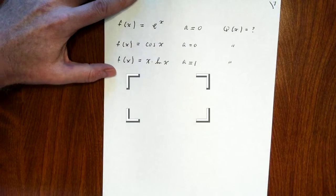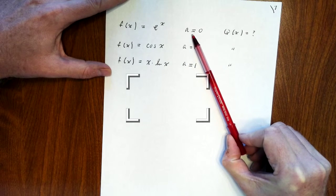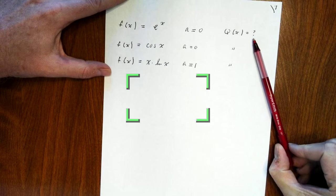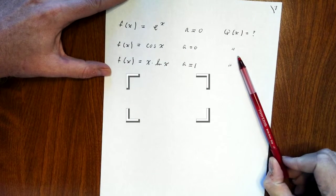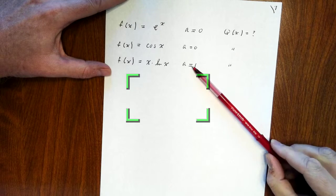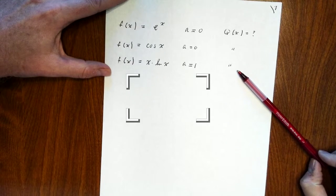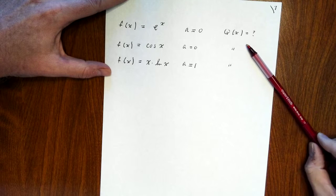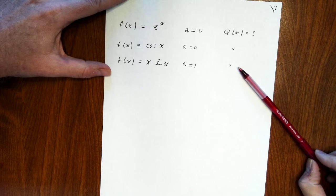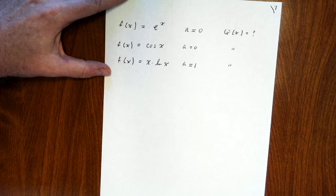For preparation for the next class, look at the function e to the x at a equals 0 and find the quadratic approximation. Do the same for cosine of x at a equals 0. Then do x times the natural log of x at a equals 1 and find the quadratic approximation. Once you've computed your quadratic approximations, make sure that they are actually parabolas — you can graph them if you want.